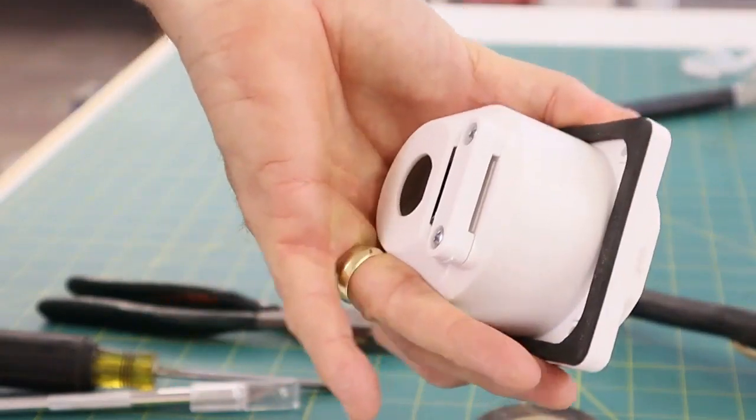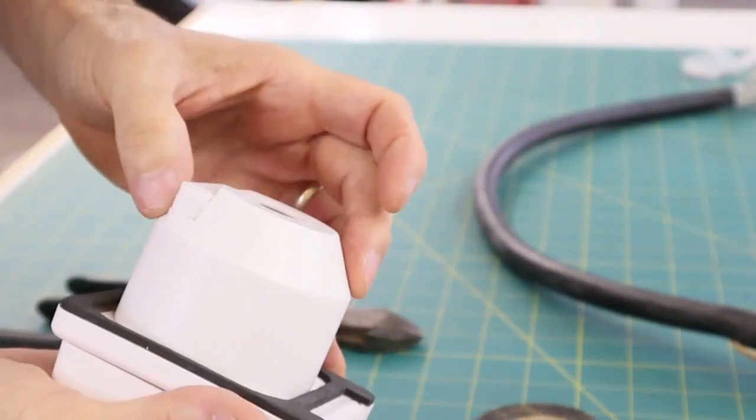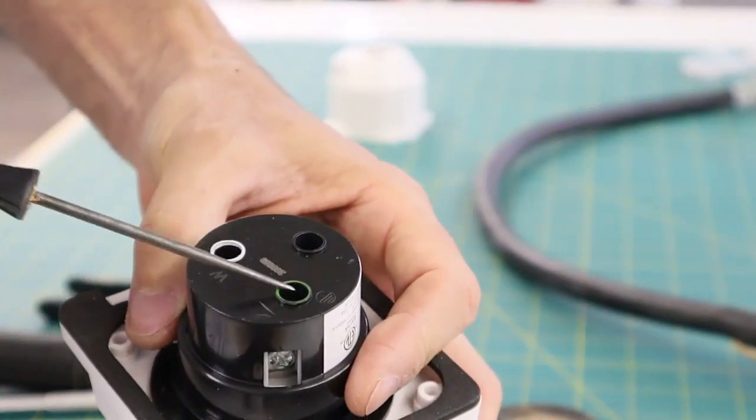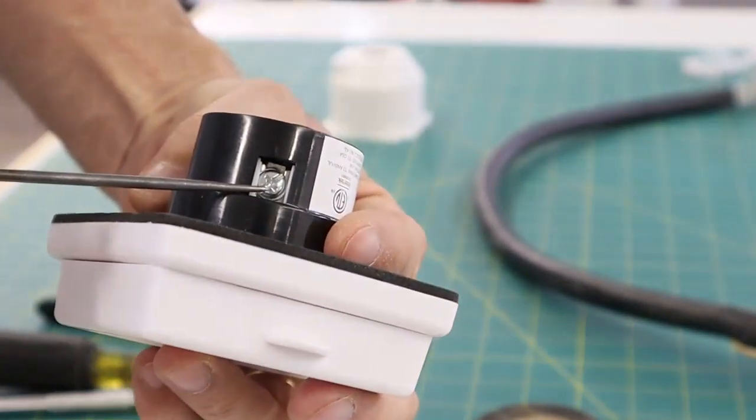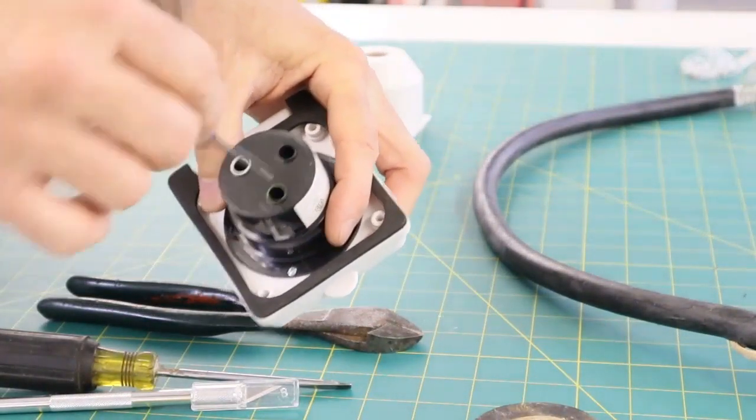Next, we had to hook up some 10-gauge stranded wire to the plug-in connector. The positions for the wires in the plug-in connector are color-coded. So I put the green wire where the green wire is marked, the white wire where the white wire is marked, and the black wire where the black wire is marked.